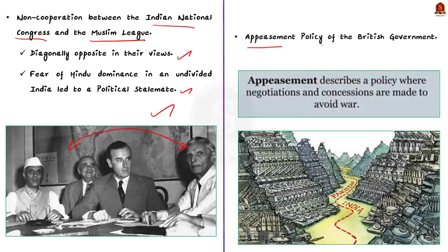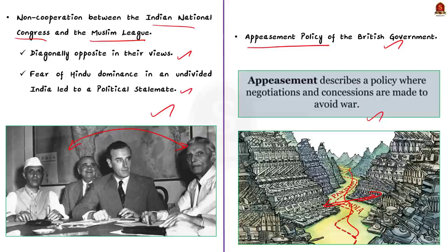The third factor is the non-cooperation between the Indian National Congress and the Muslim League. Both these parties were opposite in their views. The fear of Hindu dominance in an undivided India led to a political stalemate between Congress and the Muslim League. So, their separation and the acceptance of partition of country was the only recourse to address the deadlock. This is the third factor. The last factor is the appeasement policy followed by the British government. The government followed the appeasement policy to remove the fear of war. This policy encouraged the Muslim League to ask for the favor of separate country. So, these are the four factors that led to the partition of India.